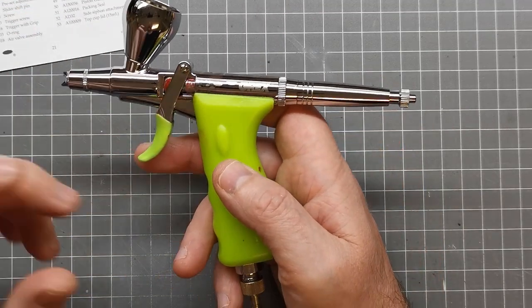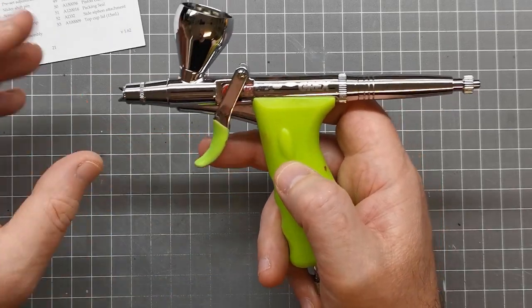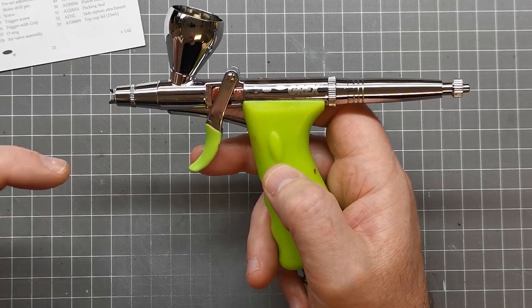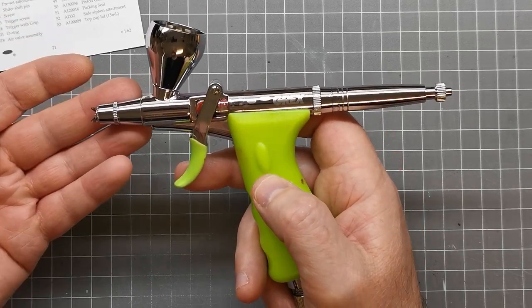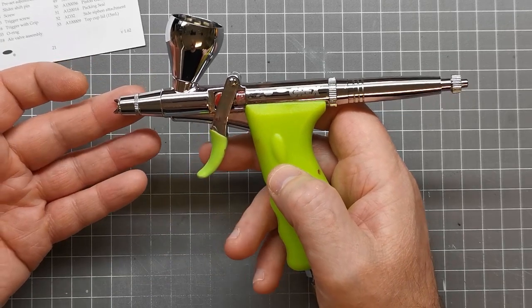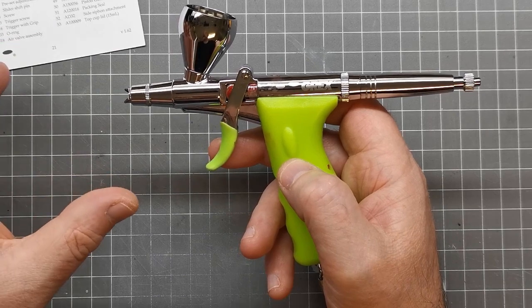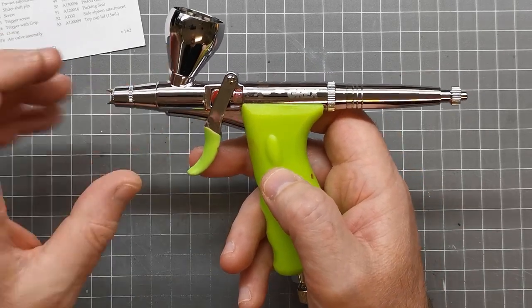The thing I really like about it, apart from being pistol grip which I find more comfortable to use, is you can change out the needle sizes. At the moment, this has a 0.3 because I've been spraying lacquers. But you can get a 0.5 mil or 0.7 mil kit.